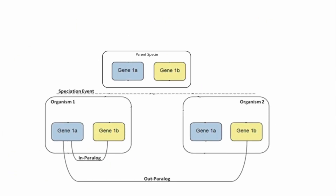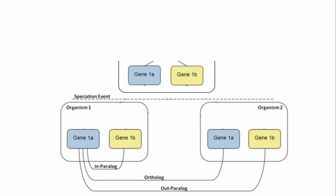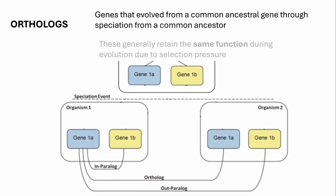The new species will acquire their own copies of gene 1A and gene 1B from their parent species by speciation. These genes that are acquired by speciation are known as orthologs. They usually have the same function as in the ancestor due to selection pressure.